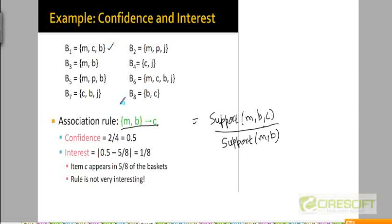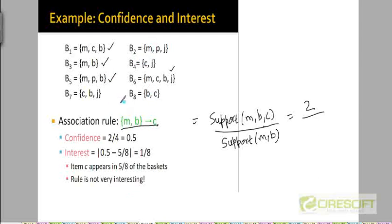And how many transactions have M and B? Those two with M, B, C obviously have M and B, and there are two other transactions which also have M and B — so there are four transactions in total with both M and B. Therefore the confidence of this rule is 2 divided by 4, which equals 0.5.